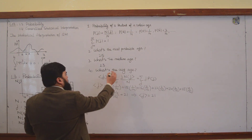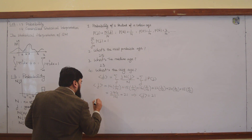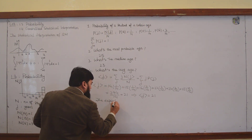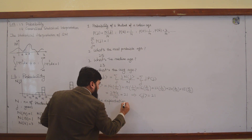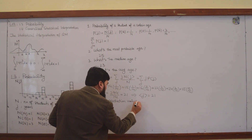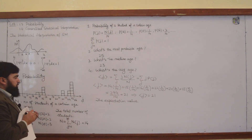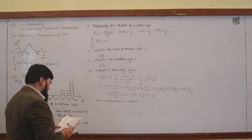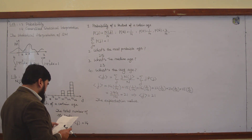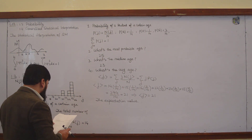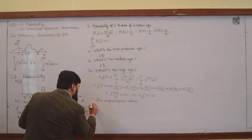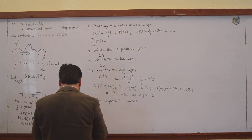In quantum mechanics, we call this average the expectation value. For all the quantum mechanical parameters, we will find the expectation value. Now the fifth question is: what is the average of the square of ages?